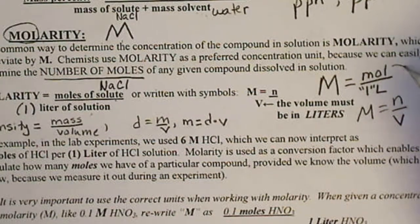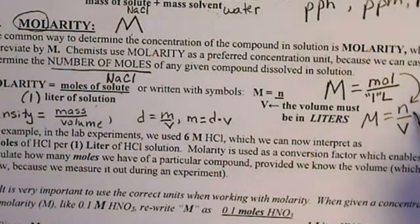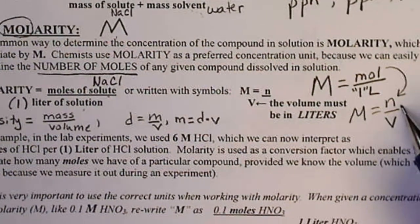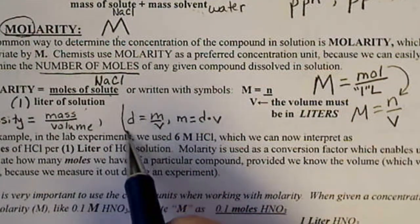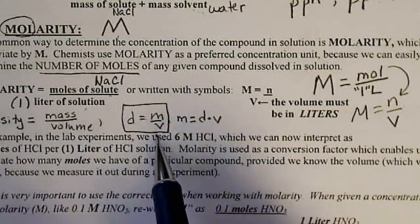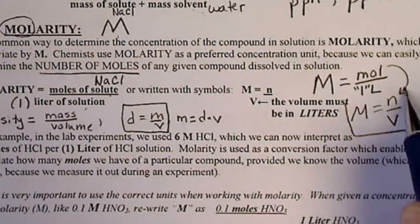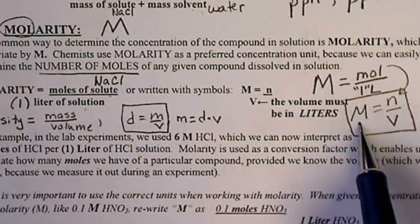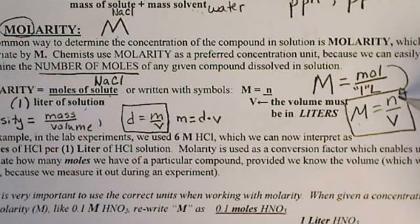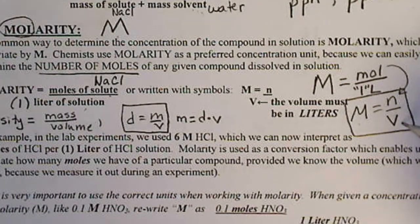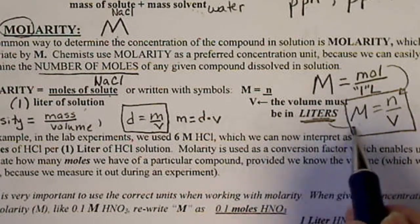In the gas law chapter, we saw that we would abbreviate moles with the variable n. So this is going to look very similar to the definition of density. This is the algebraic definition of molarity. So molarity is always a ratio of the moles in the numerator, the volume in the denominator. The only difference here is the volume has to be in liters.